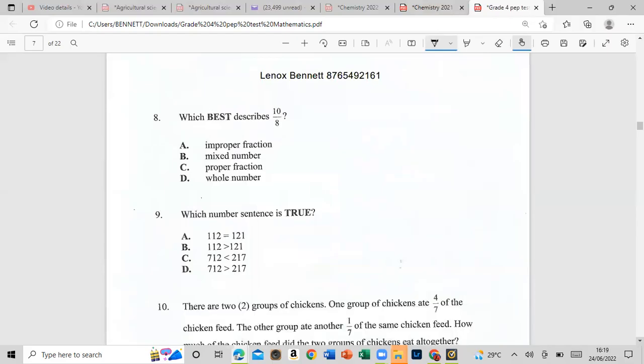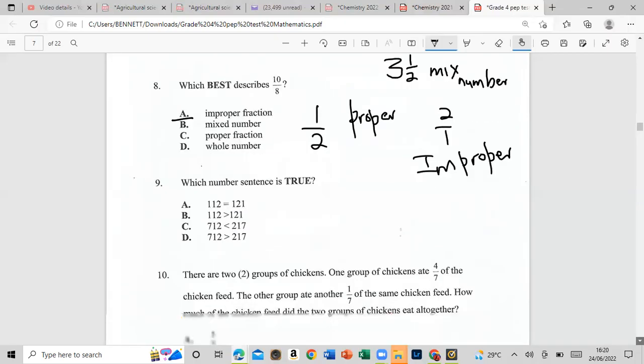Which best describes 10 over 8? This is a fraction. Let us investigate, we have 10 over 8. The numerator is bigger than the denominator, so that means it's an improper fraction. Whenever we have the numerator smaller, for example a half, that's a proper fraction. So our answer is A. Let's look at mixed number, that's a whole number and a fraction. So three and a half would be a mixed number.